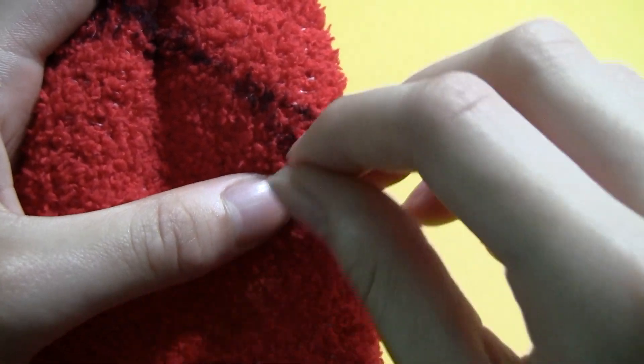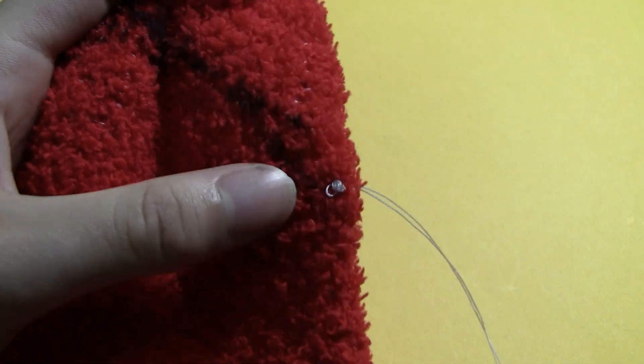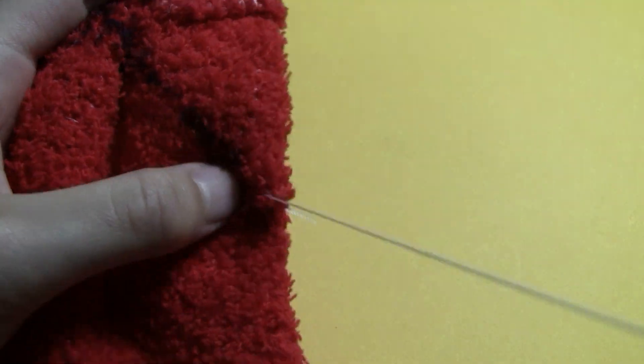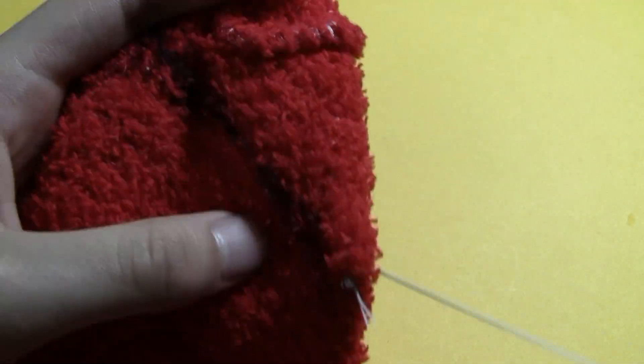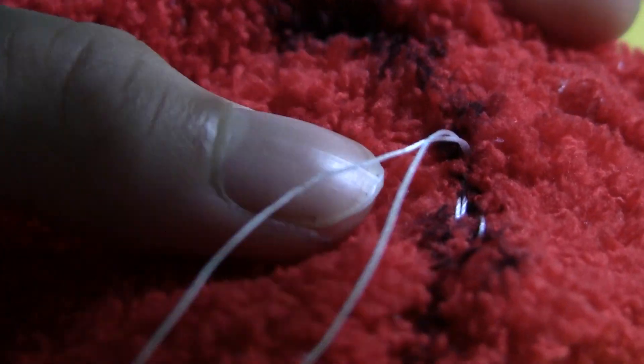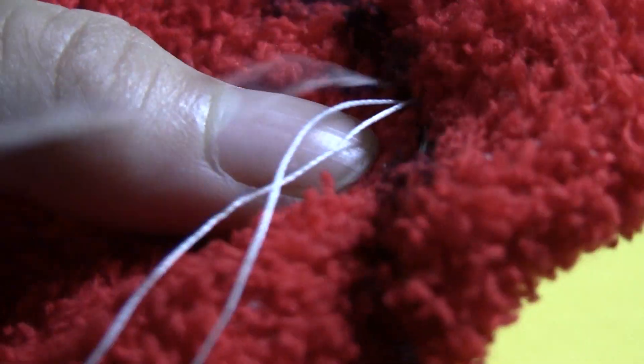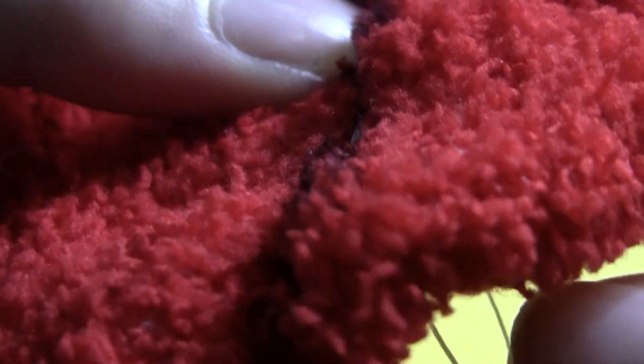Now begin backstitching along the line you drew. Once you make it to the end of the line, tie several knots and cut the thread.